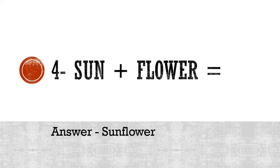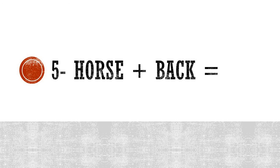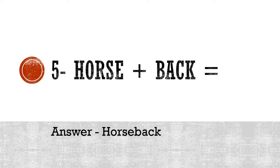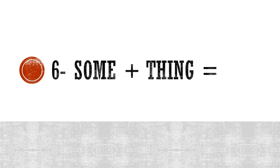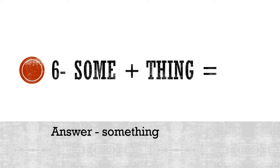Next: horse plus back. I hope many of you are writing the answers as soon as you see the question, because now it is very easy to combine these words. The correct answer is 'horseback.' Moving on to number six: some — S-O-M-E — plus thing. 'Some' means a little amount, 'thing' means it could be anything. Combine these two words — the correct answer is 'something.' This is the combination of two words — something.